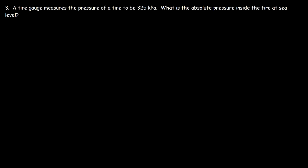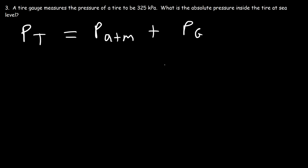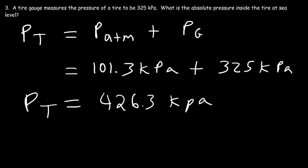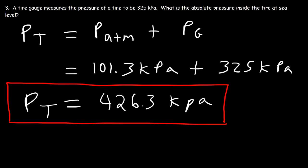Number three: a tire gauge measures the pressure of a tire to be 325 kilopascals. What is the absolute pressure inside the tire at sea level? The absolute pressure, which is the total pressure, is the sum of the atmospheric pressure plus the gauge pressure. The atmospheric pressure at sea level is 101.3 kPa, and the gauge pressure of the tire is 325 kPa. So the total pressure is 101.3 plus 325, which equals 426.3 kilopascals.